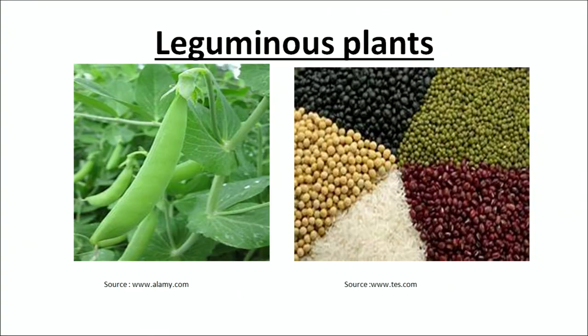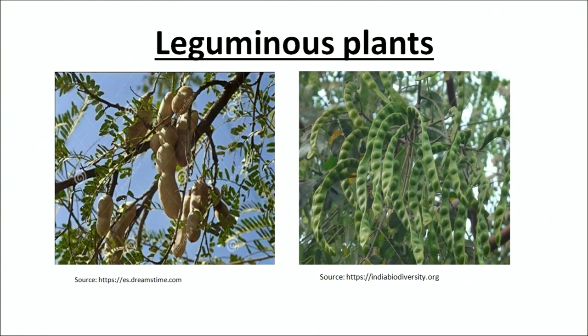Talking about leguminous plants, the most familiar examples are: the pea plant is a best example of a legume. Pulses such as rajma, chana, groundnut, and all kinds of beans are examples of leguminous plants.